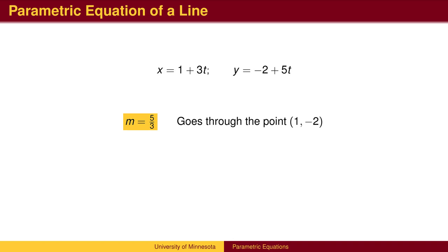When t equals 0, we are at the point (1,-2). We can then write the point-slope equation of the line.